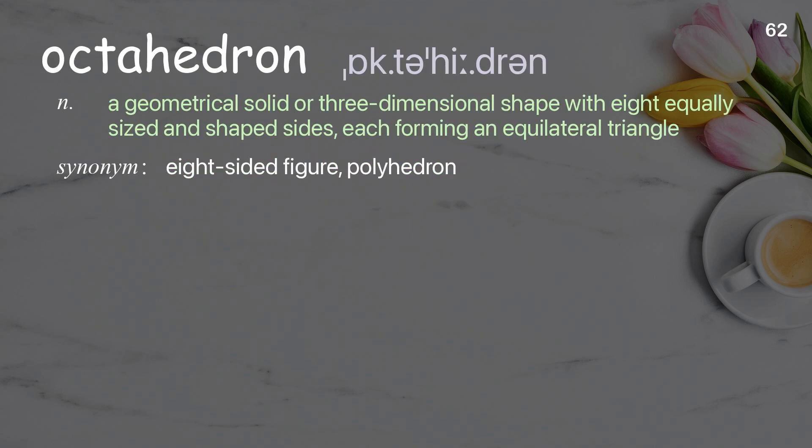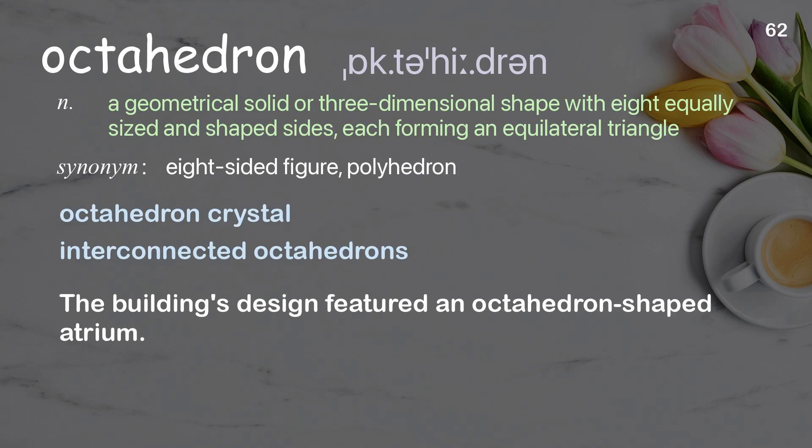Octahedron. A geometrical solid or three-dimensional shape with eight equally sized and shaped sides, each forming an equilateral triangle. Examples: Octahedron crystal. Interconnected octahedrons. The building's design featured an octahedron-shaped atrium.